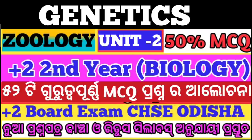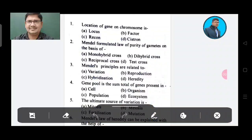MCQ questions. Question 1: Location of a gene on a chromosome is called — Option A: Locus, Option B: Pector, Option C: Recon, Option D: System. The answer is Option A, Locus.